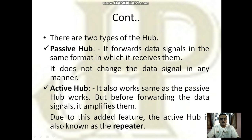There are two types of hub: passive hub and active hub. Both have the same functionality of forwarding data signals in the same format in which they receive them. But in an active hub, if the data signals become weak, the active hub can amplify them. This is the advantage of active hub over passive hub, which is why an active hub can also be known as a repeater.